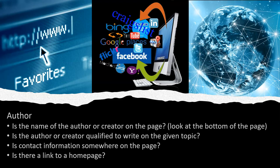Author: Is the name of the author or creator on the page? This information might be located at the bottom of the page, or it could be under a link that says 'About Us.' Is the author or creator qualified to write on the given topic? Click on their name and find out who they are. Is the contact information somewhere on the page? Is there a link to a homepage or a Facebook page?